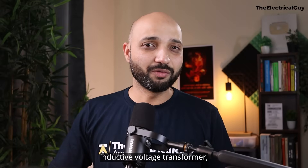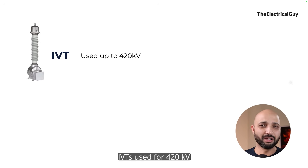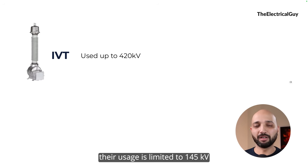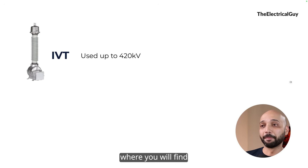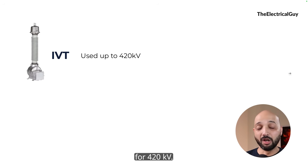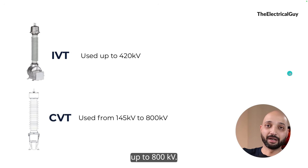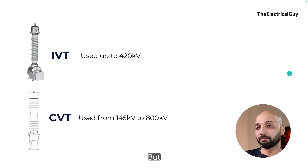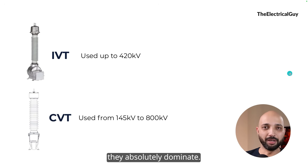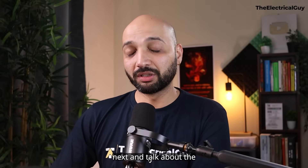Inductive voltage transformers are available up to 420 kV, but you will find very limited applications or substations where IVTs are used at 420 kV. Capacitive voltage transformers, on the other hand, are used from 145 kV all the way up to 800 kV, giving them a wide range of application. For higher voltage classes, CVTs absolutely dominate, while the use of IVTs is limited.